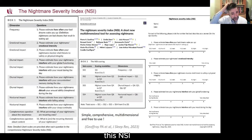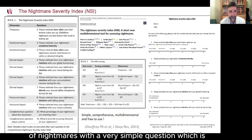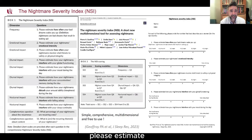This NSI has four subscores. The first one assesses the frequency of nightmares with a very simple question, which is please estimate how often your bad dreams wake you up.